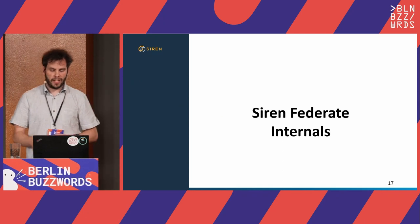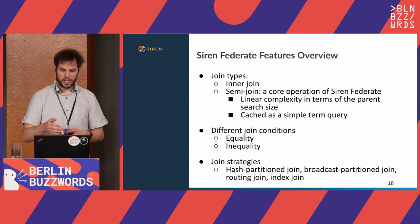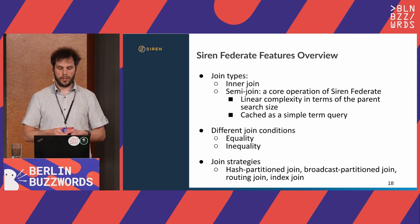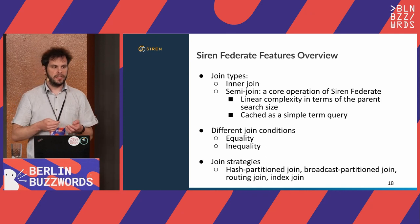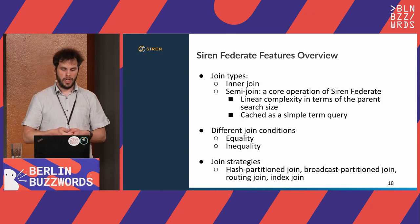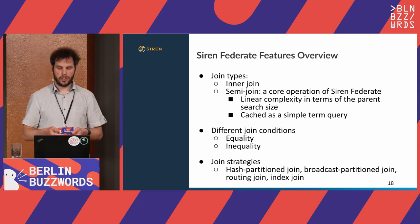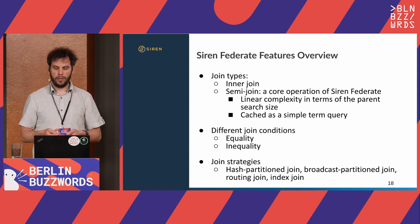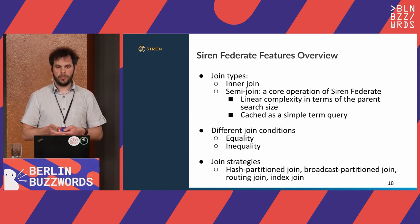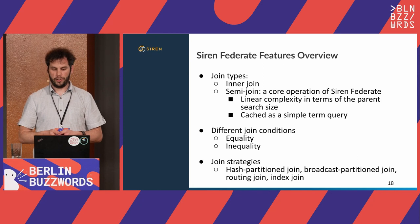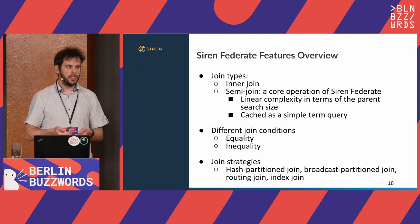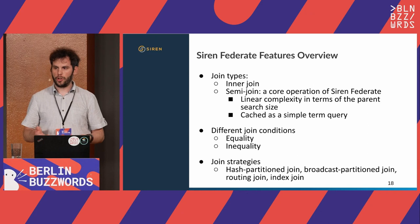Now I'll present some internals of the SAR Infederate plugin. SAR Infederate supports different types of joins. The semi-join is a core operation: its complexity is linear with the size of the parent search, and it can be cached very efficiently into a bitset — once computed, it is as costly to evaluate as a simple term query. SAR Infederate also supports different join strategies depending on the amount of documents you want to join together.